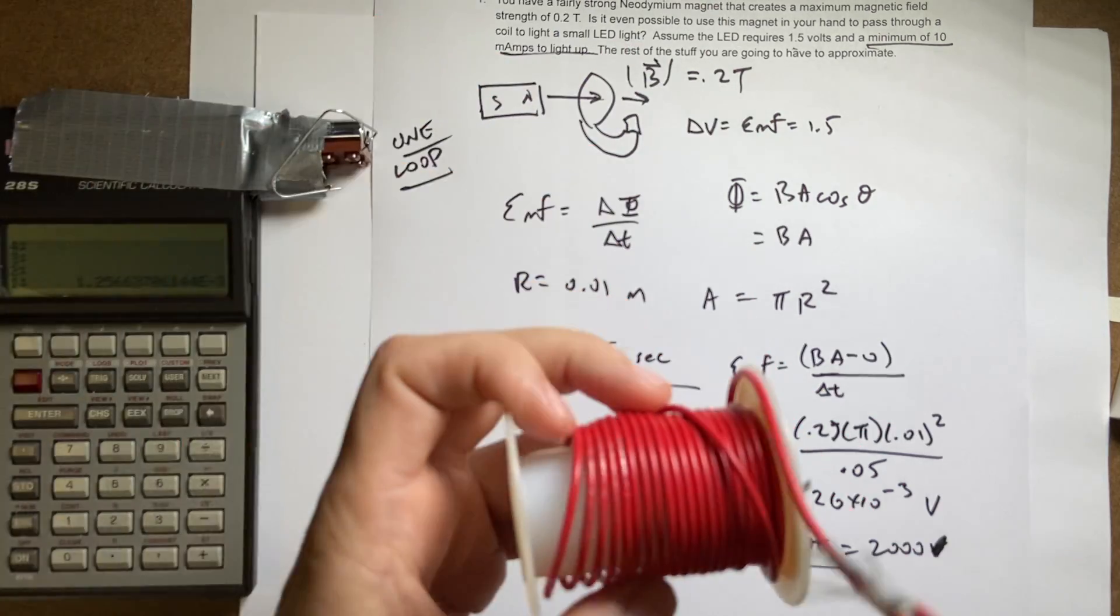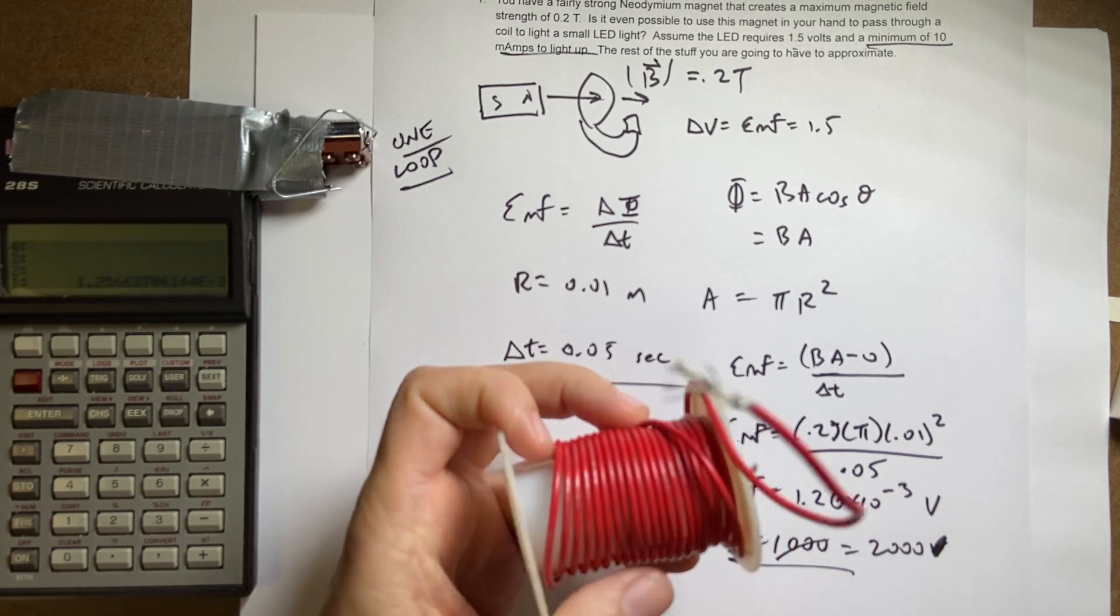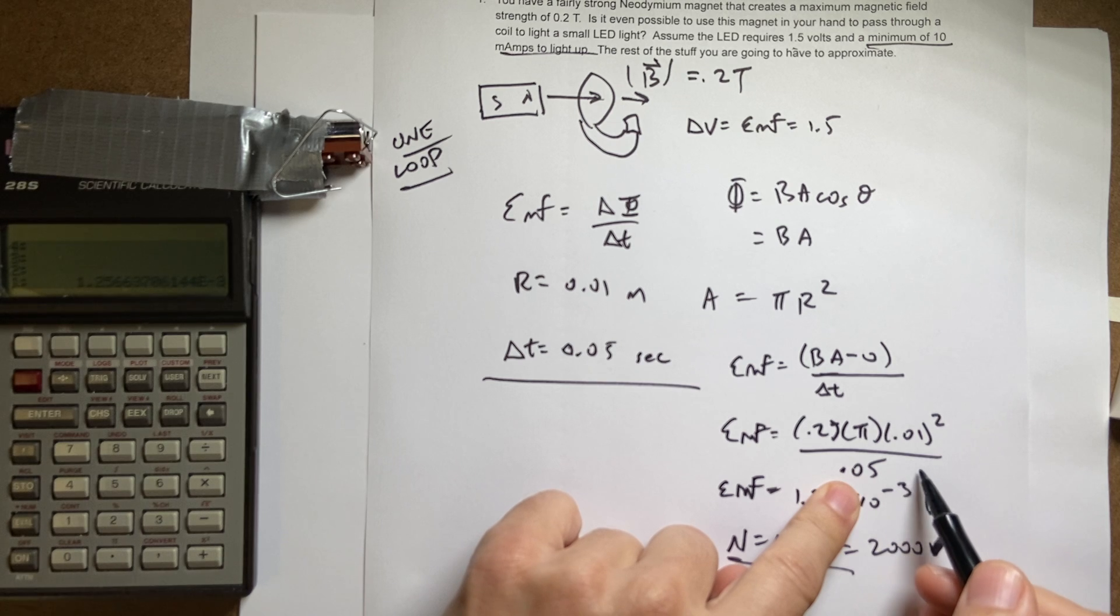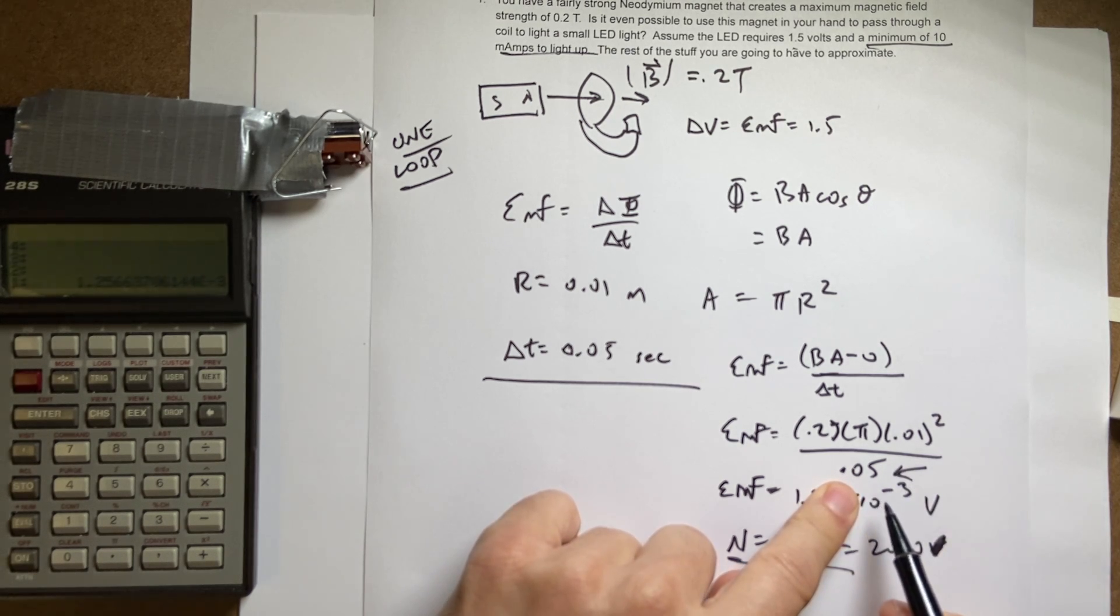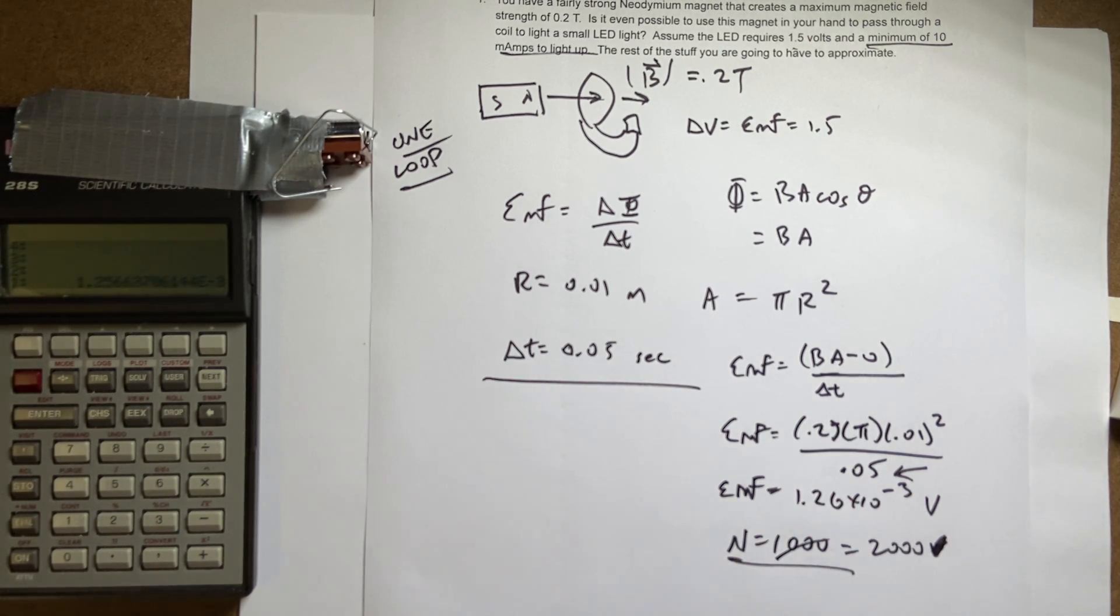So how many turns are here? Let's see. 1, 2, 3, 4, 5, 6. This is like 20. So it would have to be a lot more turns than what I have right there. 2,000 turns. But I think that is possible. I think this whole thing is plausible. I think one of my estimates that's the worst is this right here, delta T. I think it's probably bigger than that. I'd probably say 0.1 seconds is better, which would make me have to have a lot more turns. But still, it's on the order of possibility.